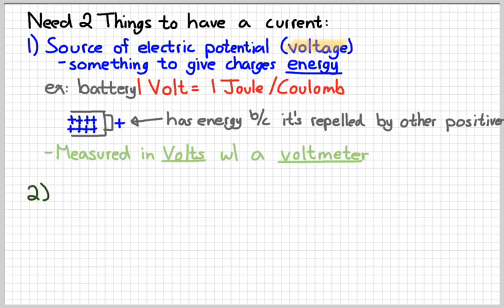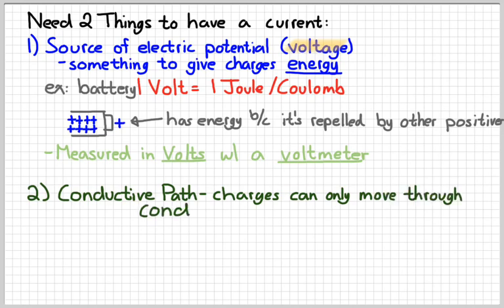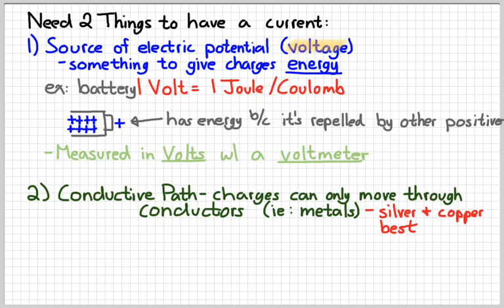The second thing that we need in order to have an electric current is a conductive path. Charges can only move through certain materials. We call materials that charges can move through conductors. Typically, metals make good conductors. Silver and copper are the two best conductors that we typically can work with.